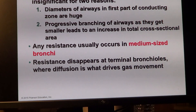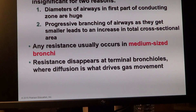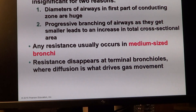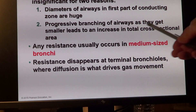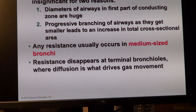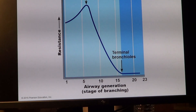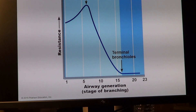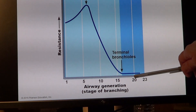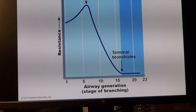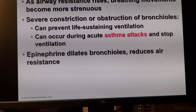Airway resistance relates to the size and diameter of the respiratory tree. Branching of the airway cross section and alveoli have different diameters — all of this plays a role in creating airway resistance. Usually the main resistance is in medium-sized bronchi. In the conducting zone, medium-sized bronchi would have the highest resistance, and terminal bronchioles would be low because they gradually transition into respiratory bronchioles and alveolar ducts.